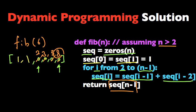This is a much better solution than the previous solution. To find the nth Fibonacci number, it only takes linear time, so it's much faster.